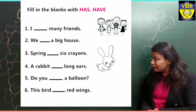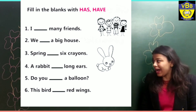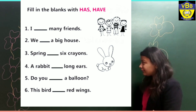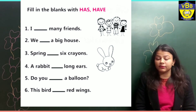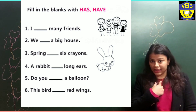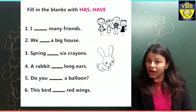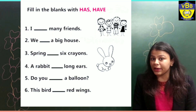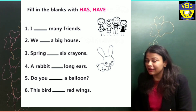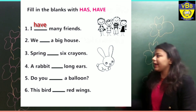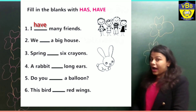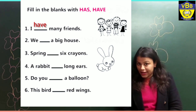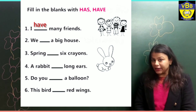Our first sentence is: I dash many friends. Here we are talking about I, so which word will we use with I? The correct answer is have. Our correct answer is: I have many friends.